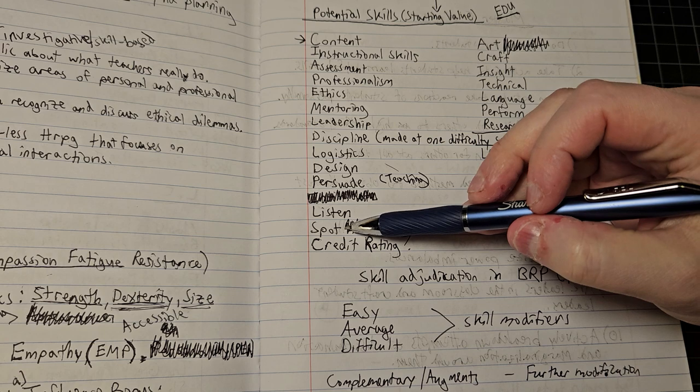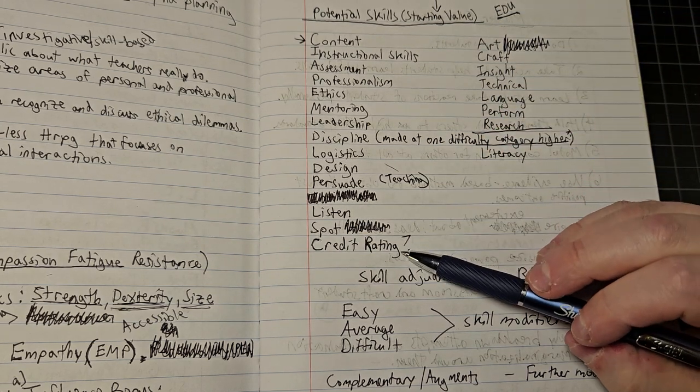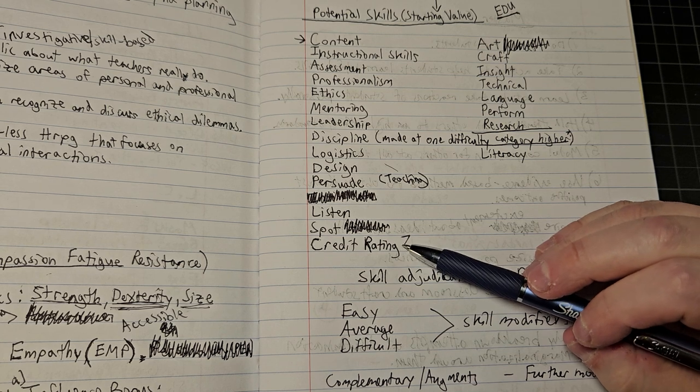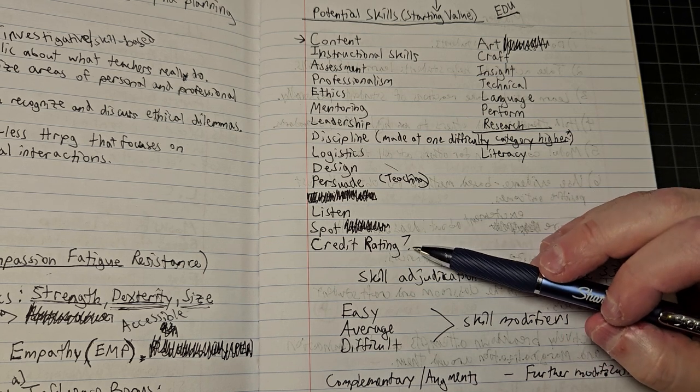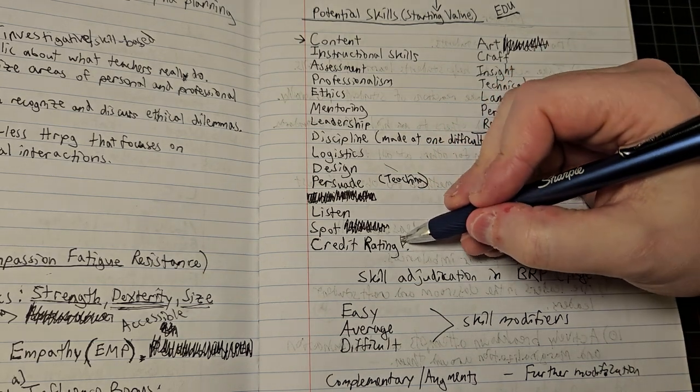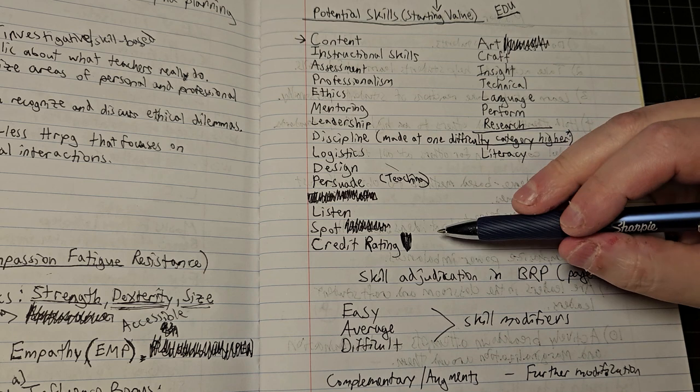We definitely need the listen skill, we definitely need the spot skill to keep everybody safe. I'll talk a little later about whether I want to include credit rating as a skill for this, because it is a dimension of being a teacher and I don't want to leave any critical element out of the profession. It would be really unfair to pretend like money isn't an issue for teachers, because it is.